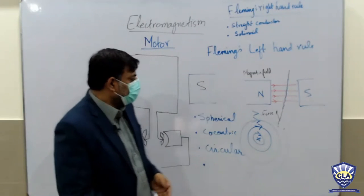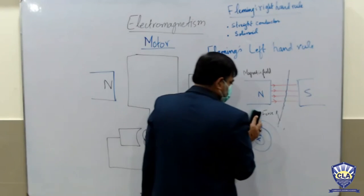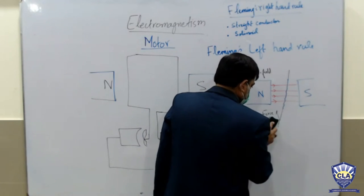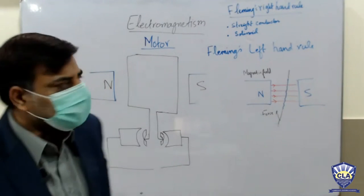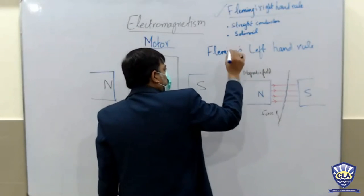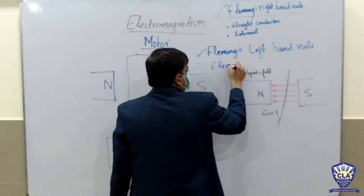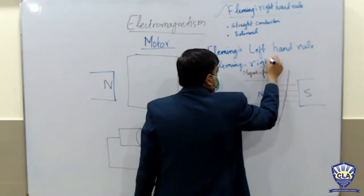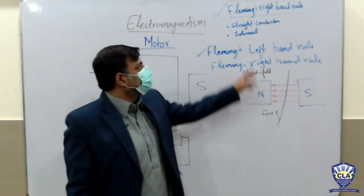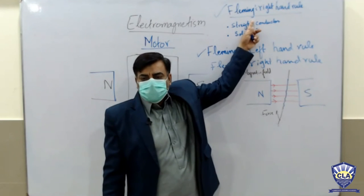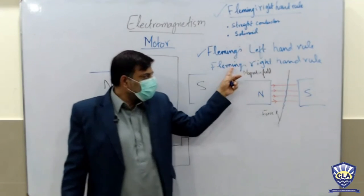Fleming's left hand rule is clear. Now the teacher introduces a new topic: Fleming's right hand rule — but a different version. Some students mentioned 'Fleming's right hand grip rule' — you can use that term, but what we are now studying is purely Fleming's right hand rule as it applies to a new context.